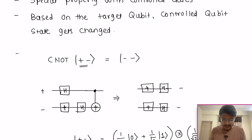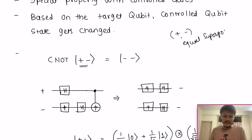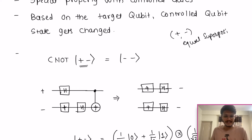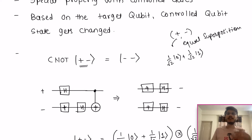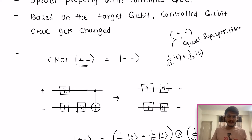This involves equal superposition states and the CNOT gate. What is an equal superposition state? The plus and minus states are equal superposition states. The plus state is 1/√2 |0⟩ + 1/√2 |1⟩, so it has 50% probability of being in 0 and 1. The minus state is the same but with a reverse phase: 1/√2 |0⟩ − 1/√2 |1⟩. That's why these are called equal superposition states.